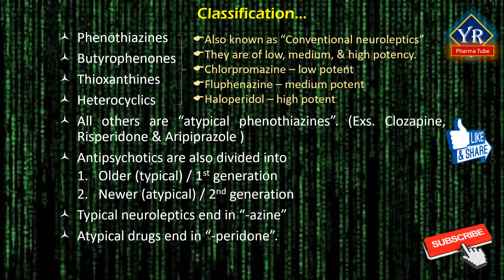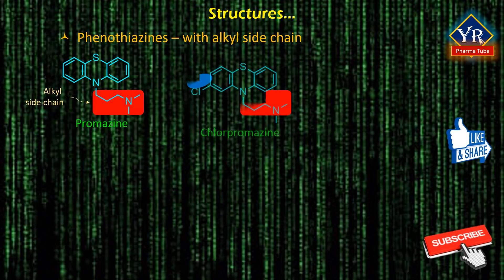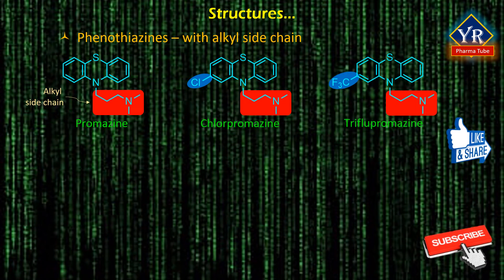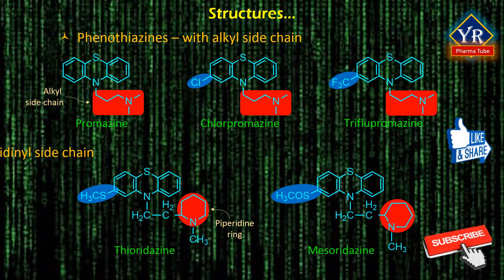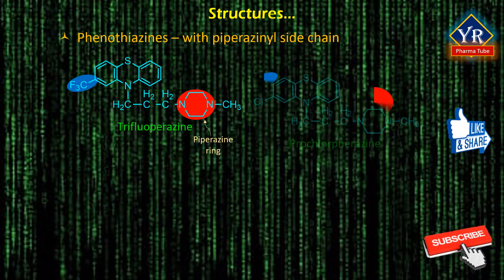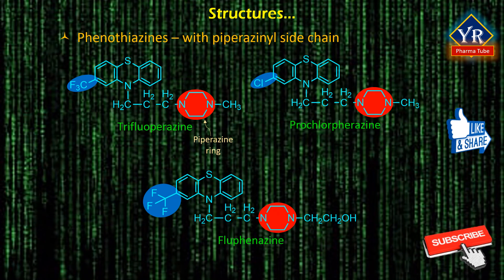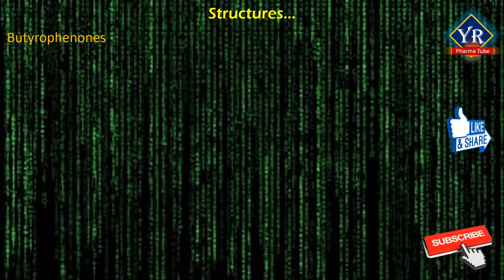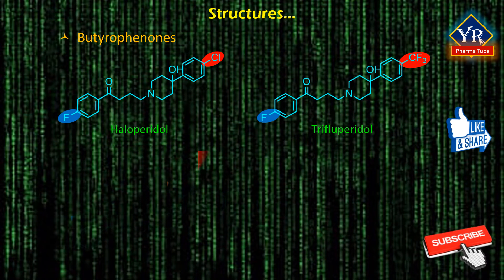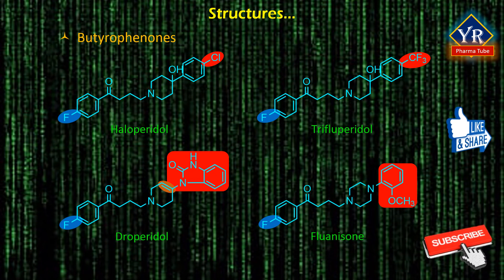Here are the structures of phenothiazines with alkyl side chain: chlorpromazine, promazine, and trifluopromazine. Thioridazine and mesoridazine are the structures of phenothiazines with piperidinal side chain. Trifluoperazine, prochlorperazine, and fluphenazine are phenothiazines with piperazinyl side chain. Butyrophenones such as haloperidol, trifluperidol, droperidol, and fluanisone are shown here. They consist of a ketone flanked by a phenyl ring and a butyl chain, which forms the basis for many other chemicals containing various substituents.